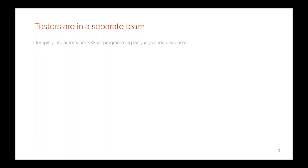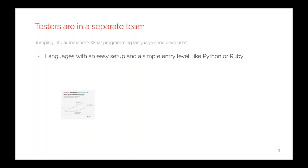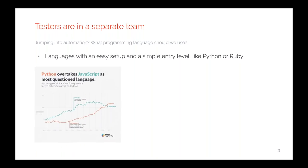Normally, when I've been in different meetups or conferences and people want to jump into automation, the first question I get is what programming language they should use to be productive as fast as possible. In my opinion, we should use a language that has an easy setup and simple entry level, like Ruby or Python. The reason is because you can start doing productive things with very few lines of code.